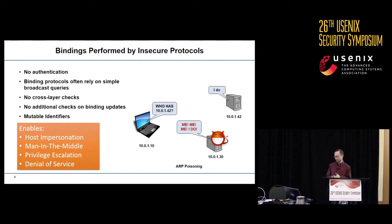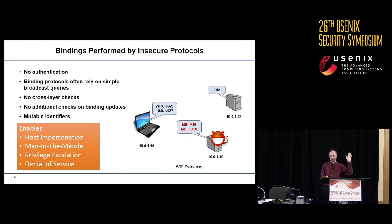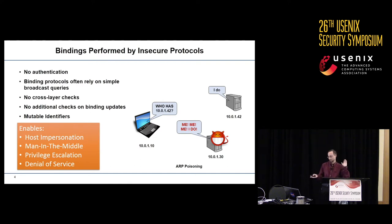ARP is a classic example, where ARP binds from an IP address to a MAC address. The way the protocol works is that if you want to know what MAC address corresponds with an IP address, you send a broadcast request to the whole network saying, who has this IP address? The host answers, I have that IP address, here's my MAC address. This leads to ARP poisoning, as you see in the slide, where attackers can claim to have IP addresses they don't actually have.